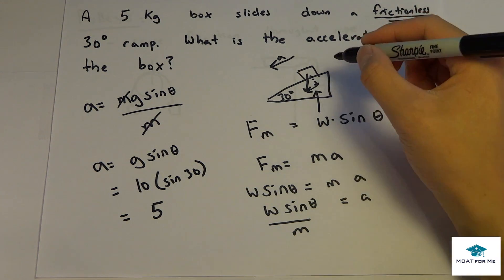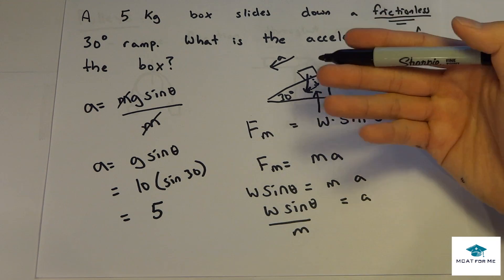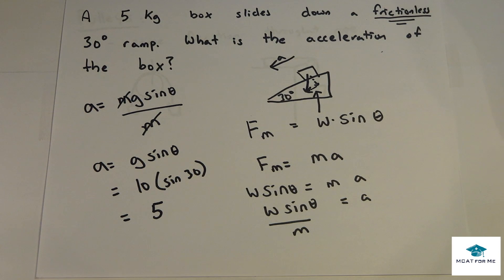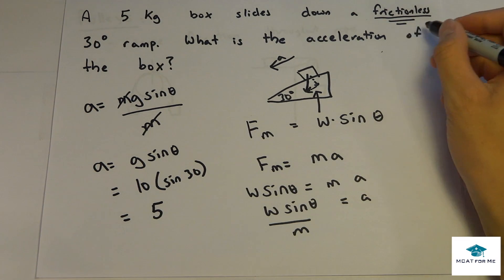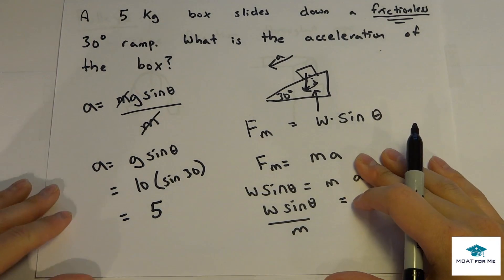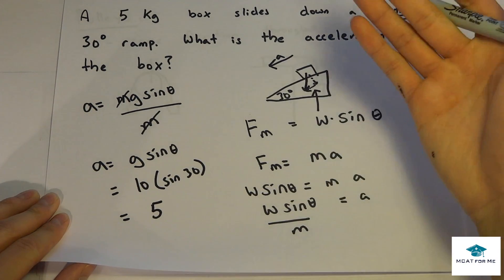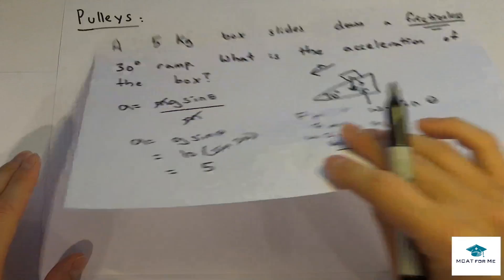And we notice that the mass of the object made no difference. This could have been a 100 kg box, it could have been a 1000 kg box, it would have never made a difference because it was frictionless. If there was friction, that wouldn't be the case. But in this case, frictionless makes it so that the mass won't even matter.